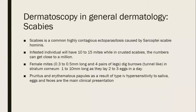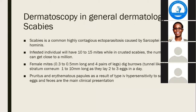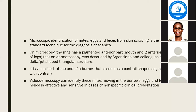Dermatoscopy use in general dermatology — we dive directly into that. And we start with scabies. Scabies is a common highly contagious ectoparasitosis. Infested individuals will have a number of mites, 10 to 15, but can get to almost a million in Norwegian or crusted scabies. The female mites, which are bigger than the male mites, dig burrows or tunnel-like through the stratum corneum, and they lay two to even up to five eggs in a day. The clinical presentation is pruritus, worse at night, due to hypersensitivity to the saliva, eggs, and even the feces of the mites. Microscopy identification — you can see the mites, eggs, and feces when you do a skin scraping. This is a standard technique.